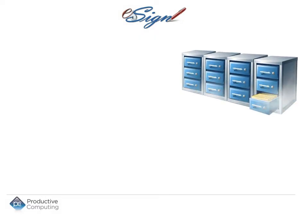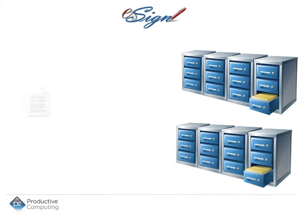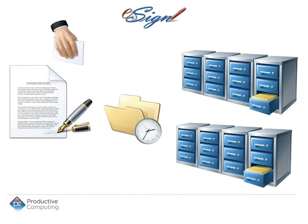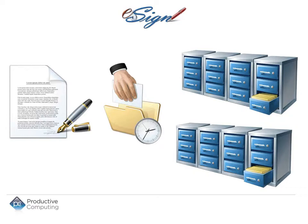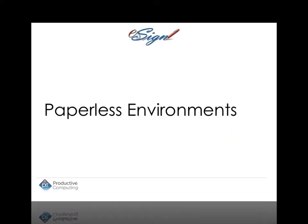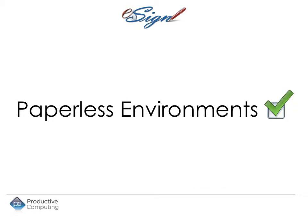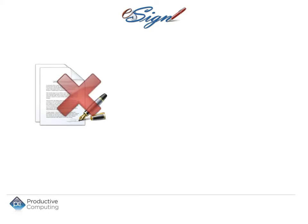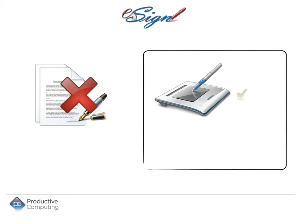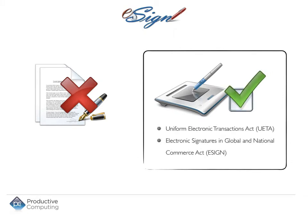Storing, retrieving, and maintaining paper documents has long required considerable investments in time and space, both of which are valuable commodities. In an effort to reduce the expense of using and maintaining paper documents, Productive Computing is poised to lead the FileMaker community into paperless environments. It is now possible for businesses to move from wet ink to digital signatures, as technology for capturing digital signatures is readily available and digital signatures are now accepted as legally binding.